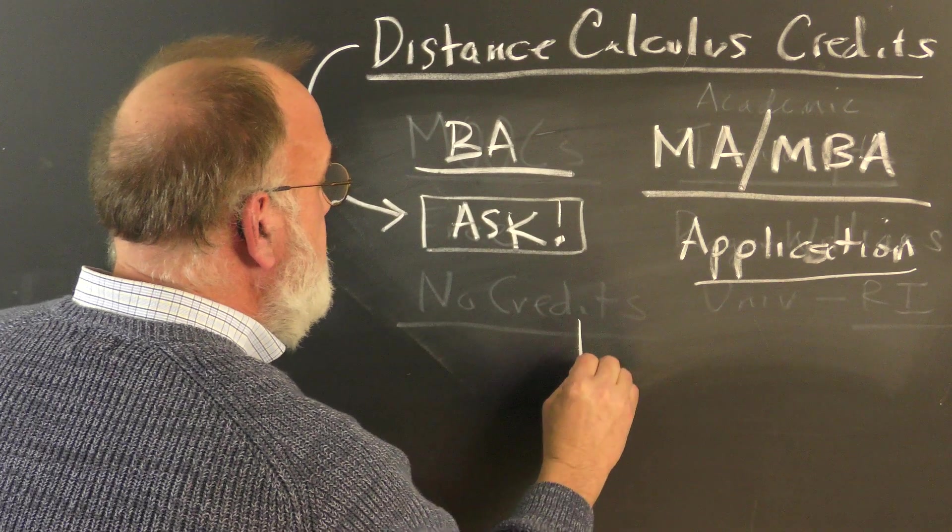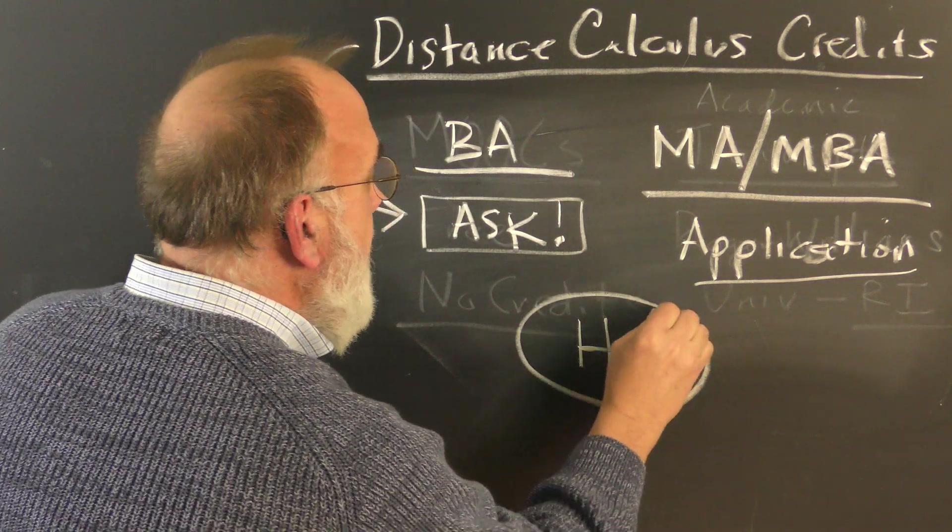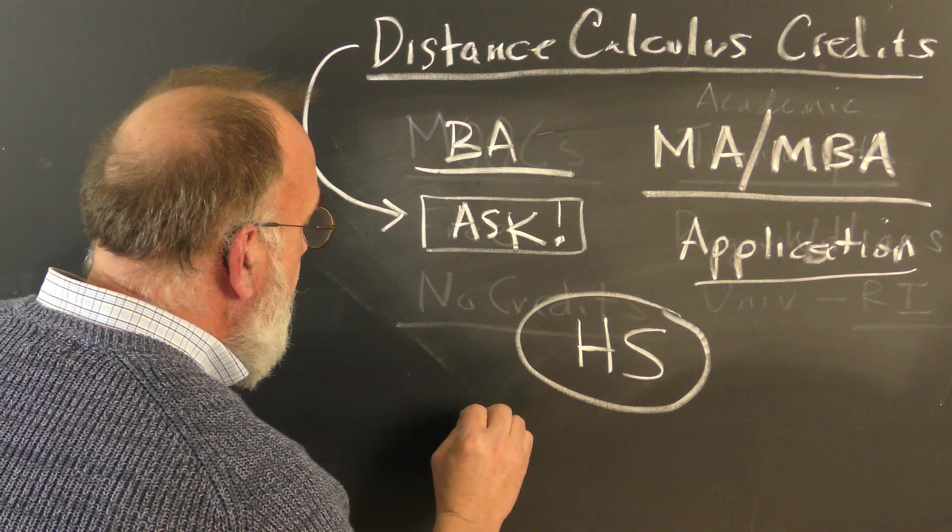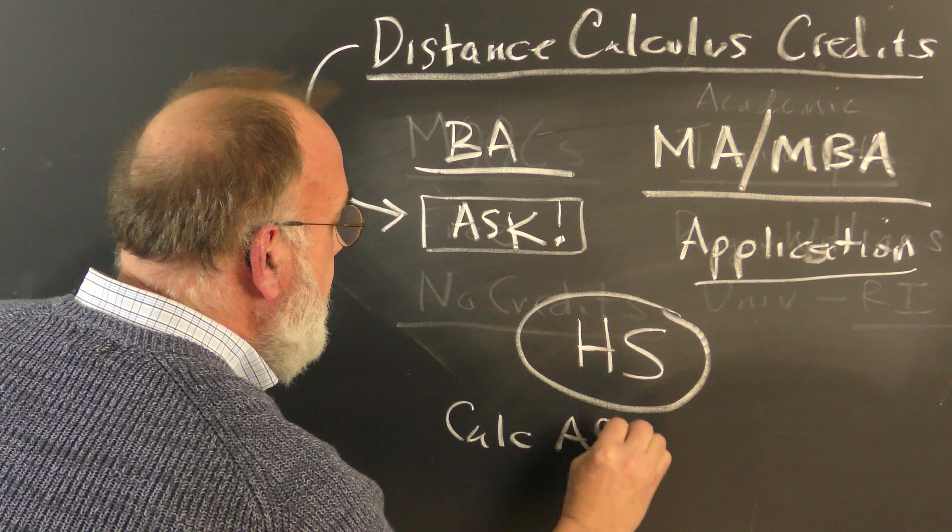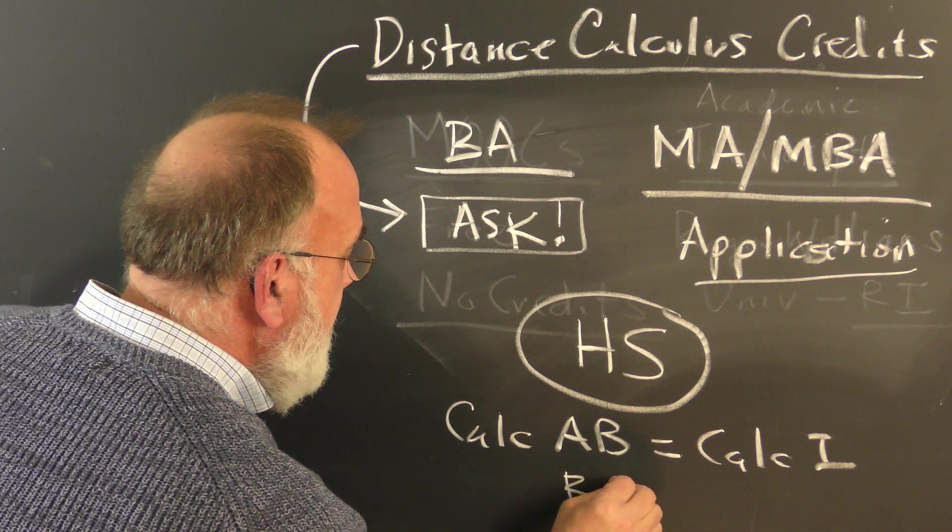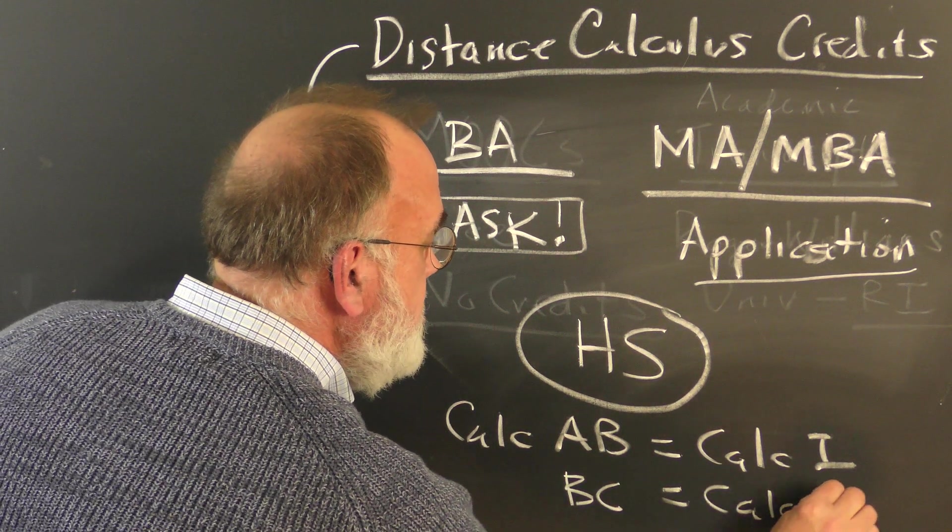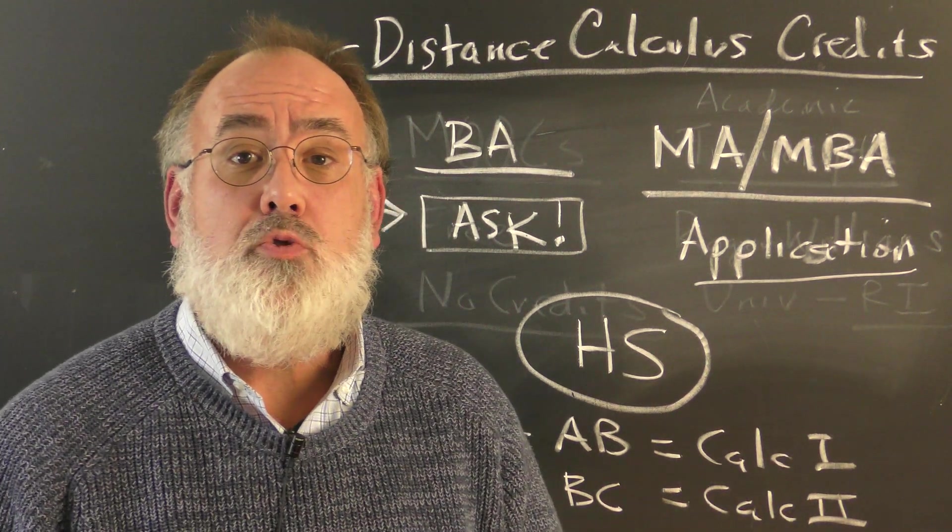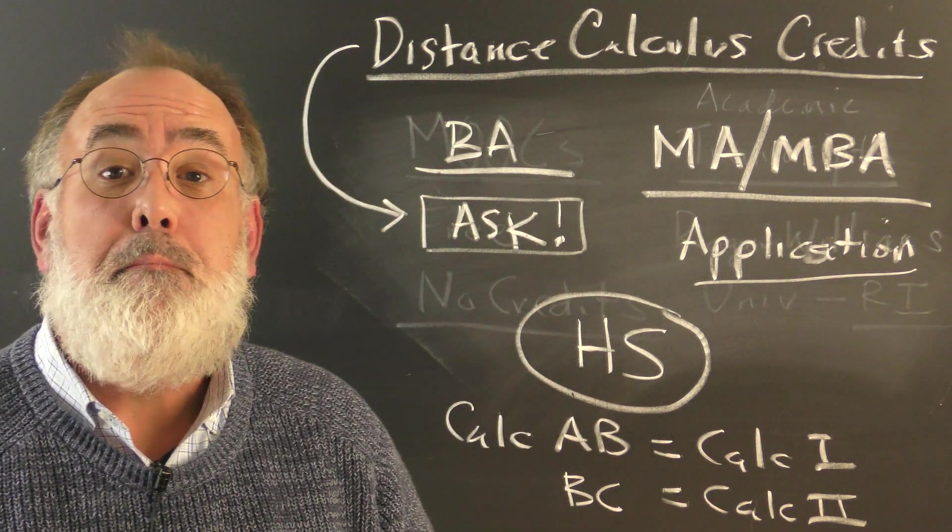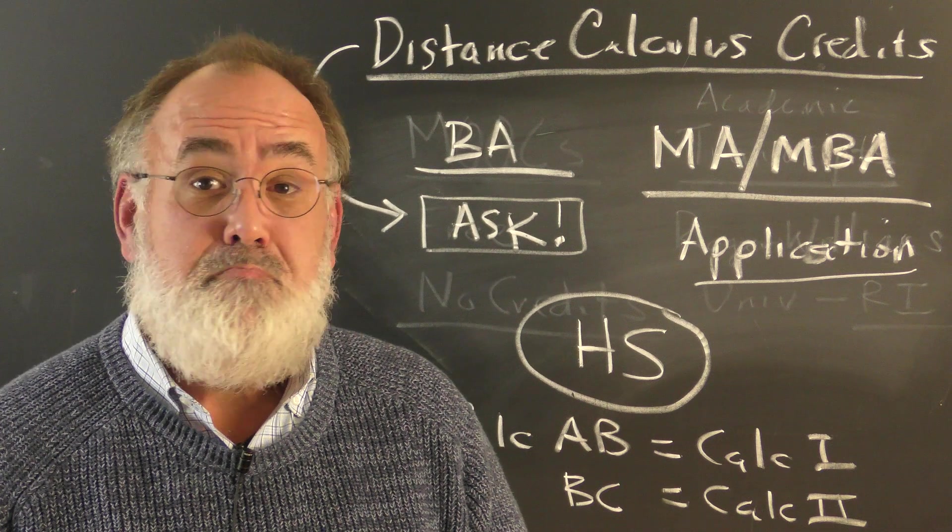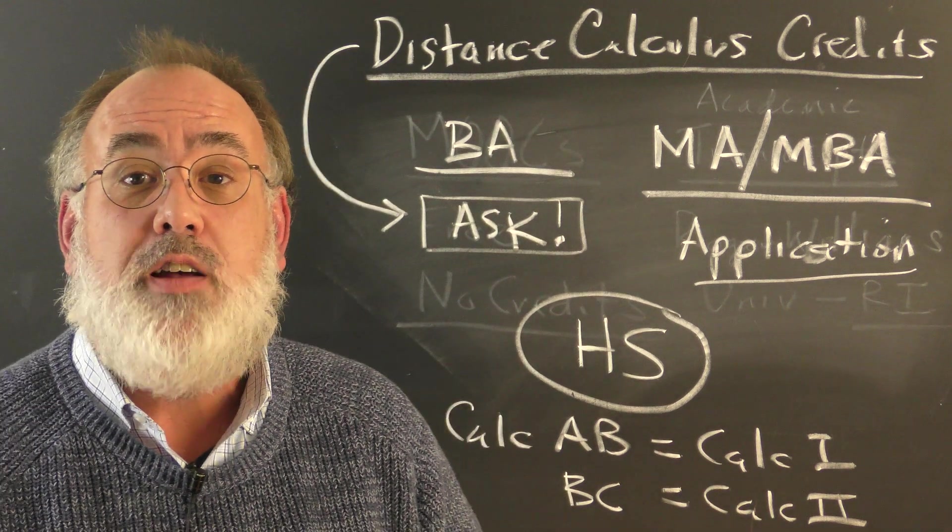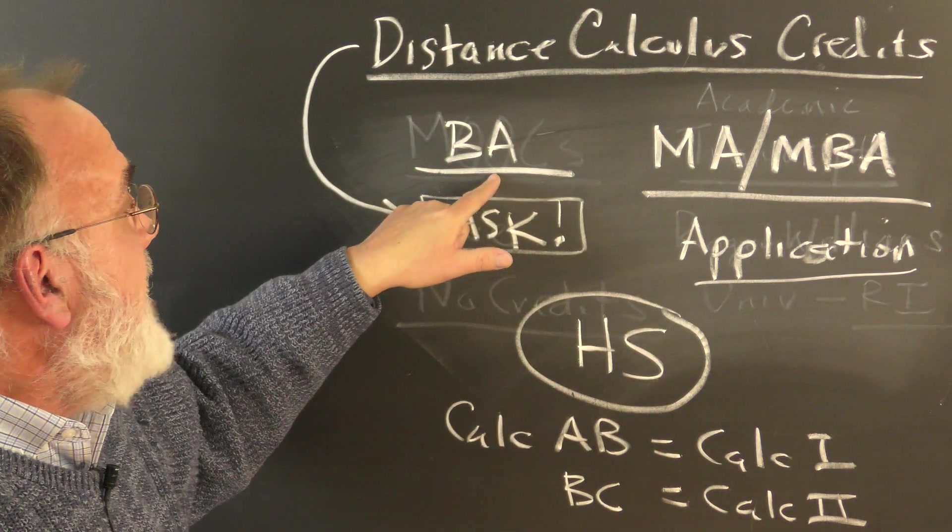We also have a large number of students who are in high school. And in high school, generally you take calculus AB, that is equivalent to calculus 1. And sometimes you might also take BC, which is equivalent to calculus 2. Very, very few high schools offer anything above calculus 1 and calculus 2. We get many, many high school students who are very good students, and they have finished all of their high school calculus and they want to take more before they start their bachelor's degree.